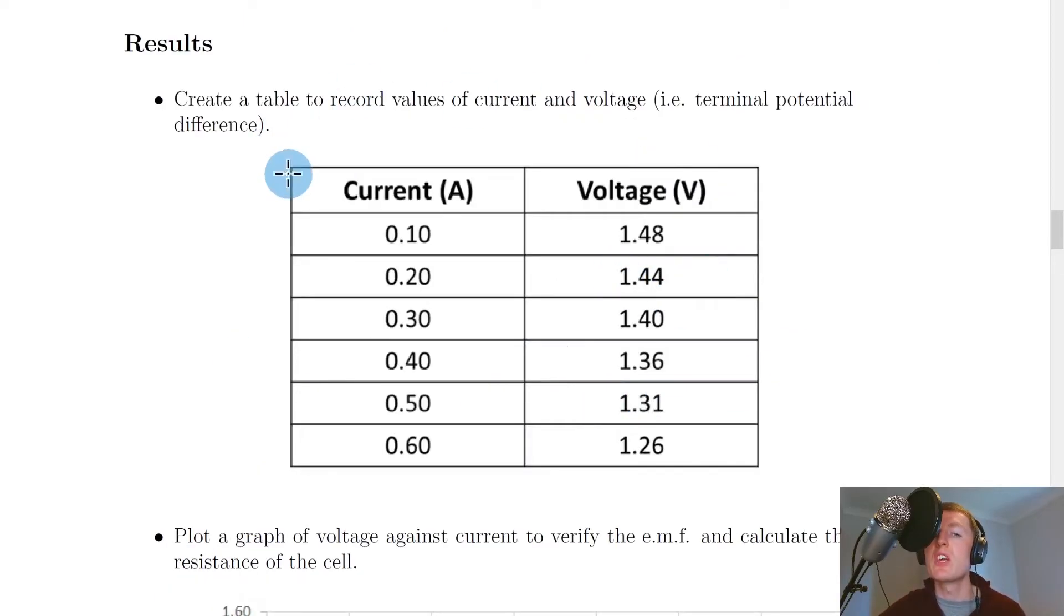So for the results section here you can create a table to record values of current and voltage, i.e. the voltage here is our terminal potential difference. So let's say we went up in steps of 0.1 for the current starting at 0.1 amps and up to 0.6 amps and the voltage here we can see actually gets smaller so the voltage decreases as the current increases.